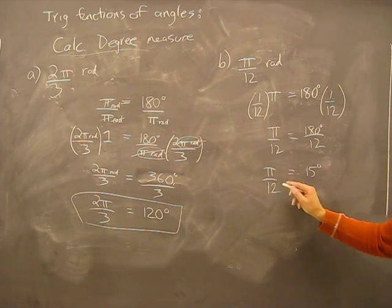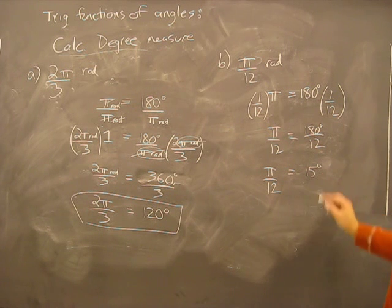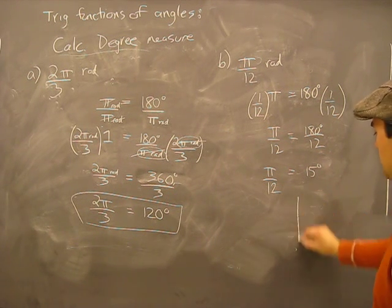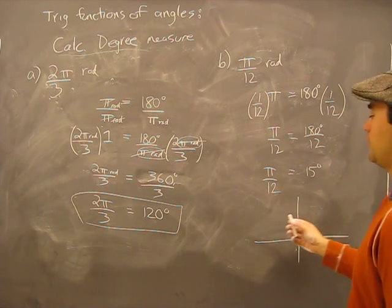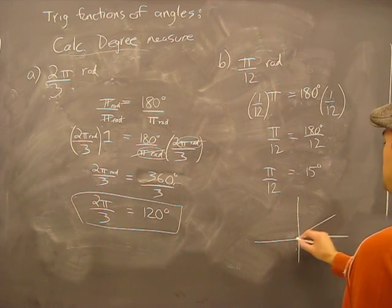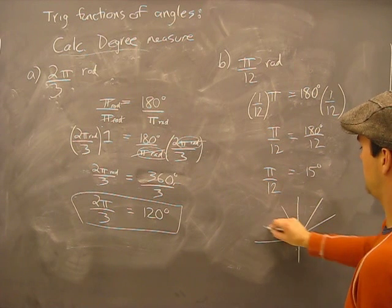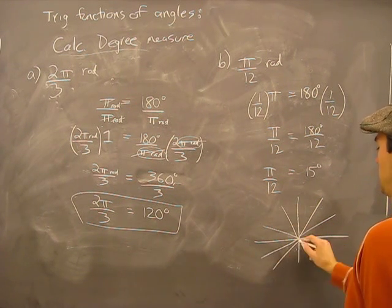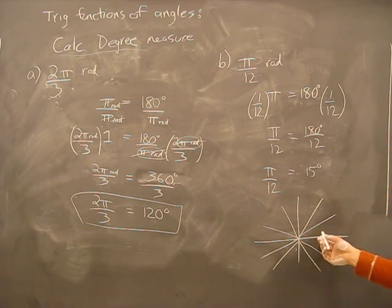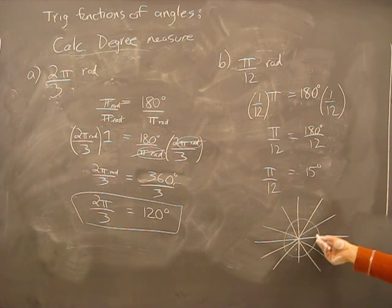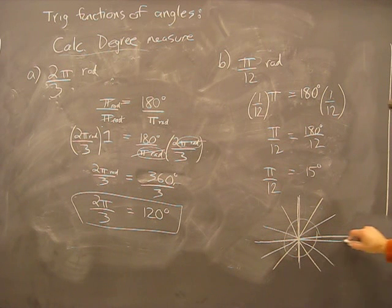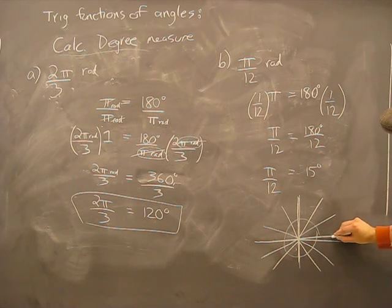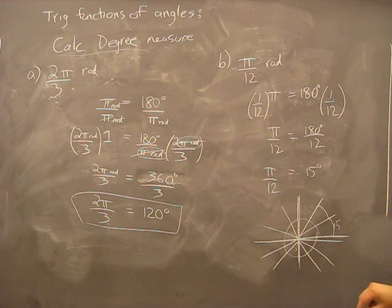And then, well, 180 divided by 12, that actually turns into 15 degrees. I had to check that out there. π over 12, so that means that this measurement, this angular measurement, equals 15 degrees. What does that look like on a circle? Well, just like this: we would have a circle divided into 12 parts, so maybe 3 sections per quadrant.